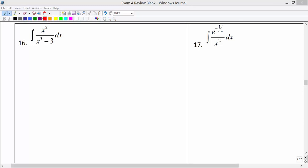Alright, for number 16 and number 17, we are going to be using the substitution method. So we're going to let u equal the most complicated part of the expression. And I would say that our denominator here is the most complicated part. So we'll let u equal x cubed minus 3.